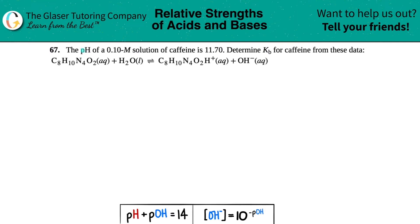Number 67. The pH of a 0.10 molarity solution of caffeine is 11.70. Determine the Kb for caffeine from these data, and then they give us a balanced equation here.